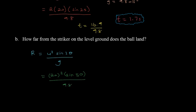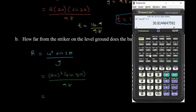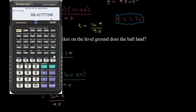Let's simplify. 20 squared times sine of 50 equals 306.4, and we divide by 9.8. We're going to get that our range R is 306.4 divided by 9.8, which works out to be 31.3 meters.